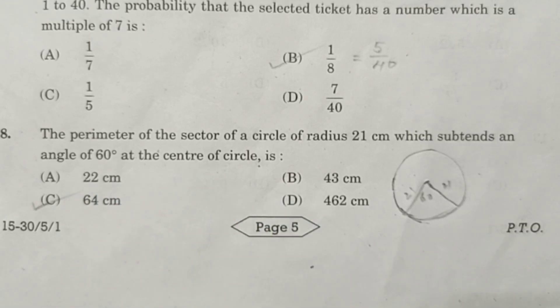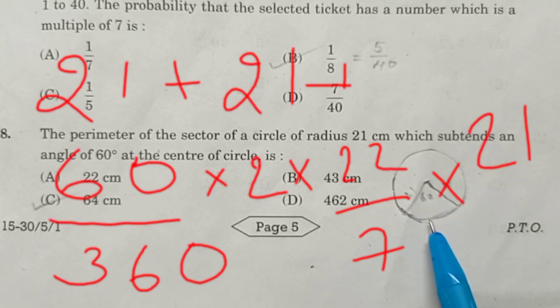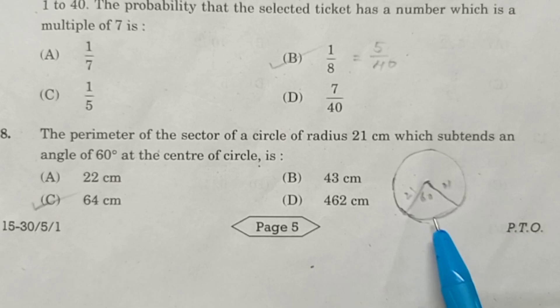Question 8. The perimeter of a sector of radius 21 cm which subtends an angle 60 degrees at the center of the circle. We have to find the perimeter. The perimeter is 21 plus 21 plus the length of the arc here, that is L equals theta by 360 into 2 pi r. Theta here is 60, therefore 60 by 360 into 2 into pi into 21 plus radius 21 plus radius 21.